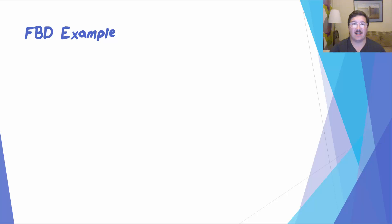Let's take a look at an example. During a tug-of-war, a 10-kilogram rope is pulled left with a force of 50 newtons by team A, and pulled right with a force of 80 newtons by team B. What is the acceleration of the rope?